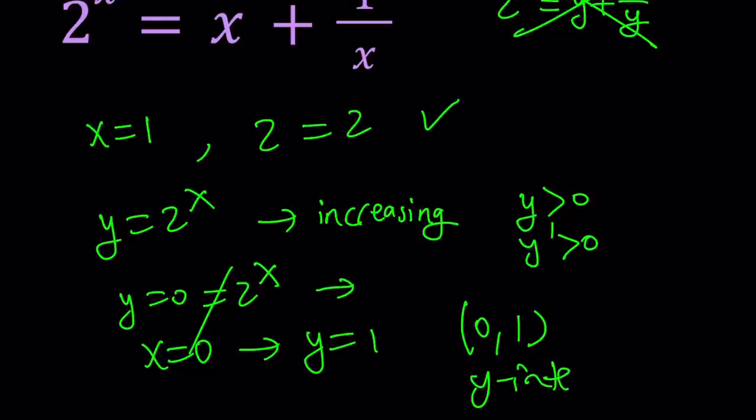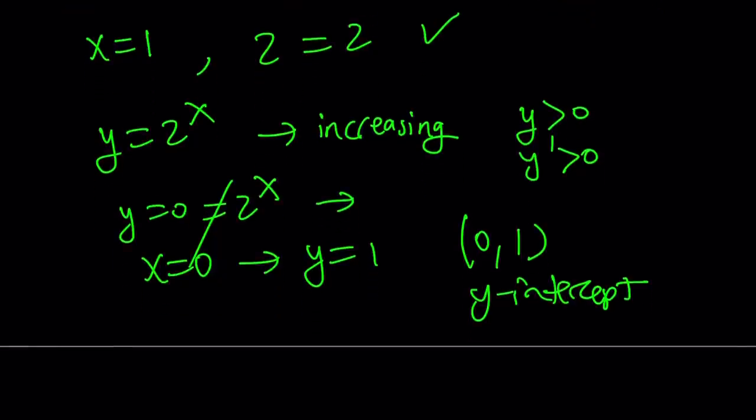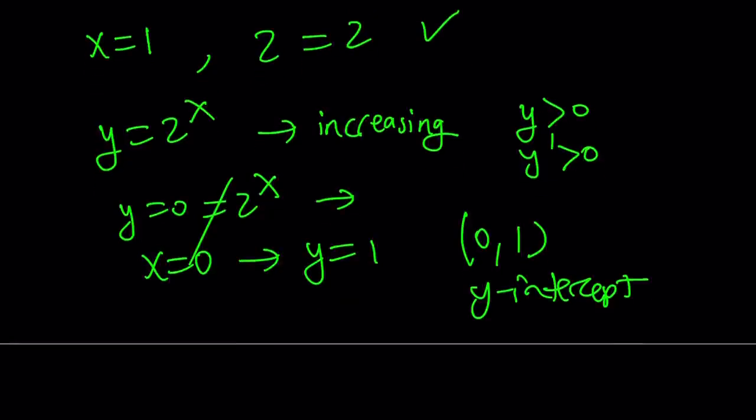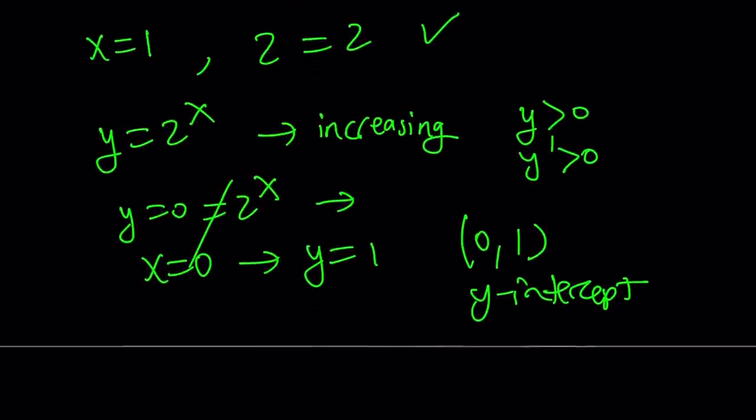Awesome. So that gives us a little bit of idea about this function: increasing, always positive, and it has a y intercept. So with this type of information, you can roughly graph it. And if you want to make a table, obviously, it's going to be even more accurate. Great.